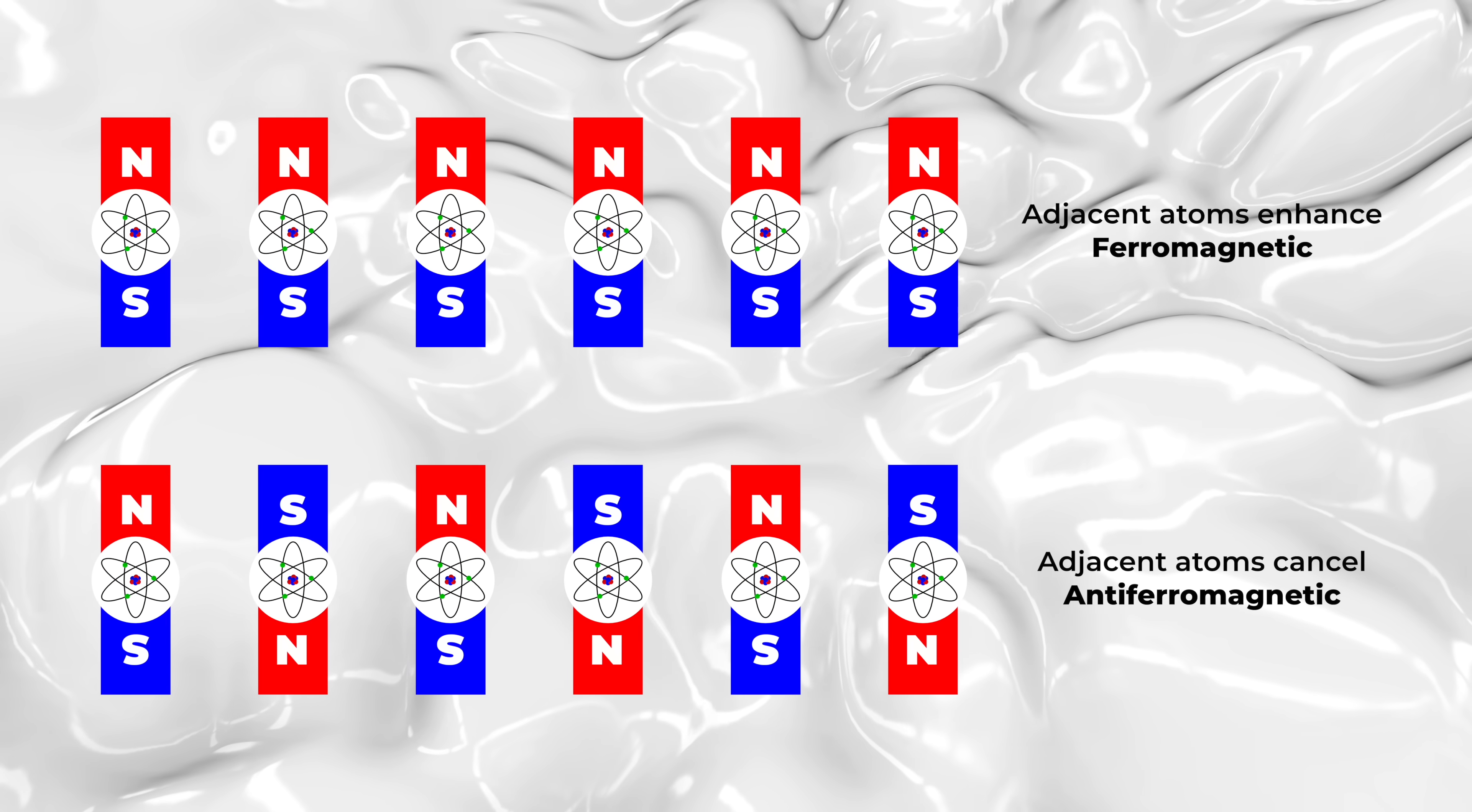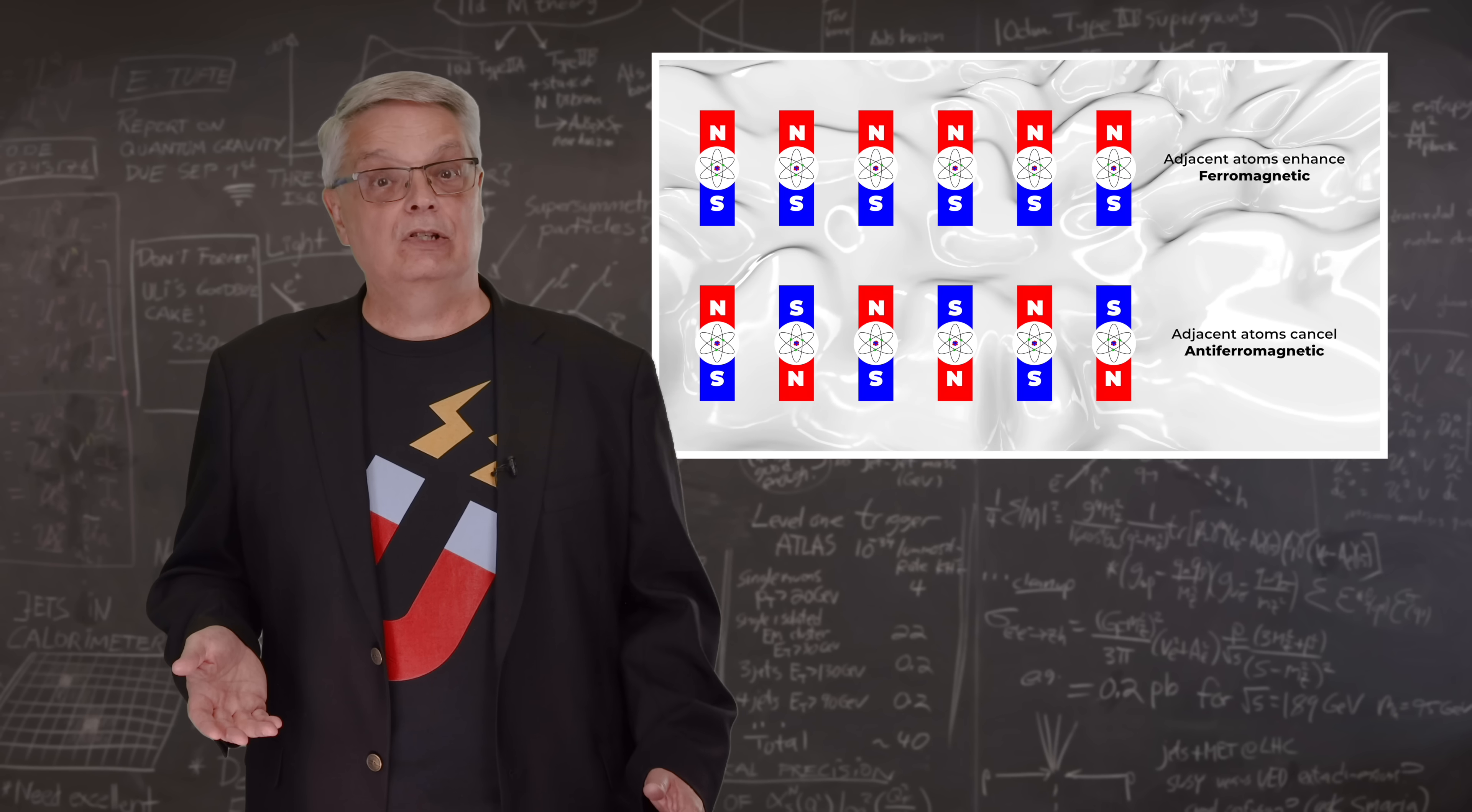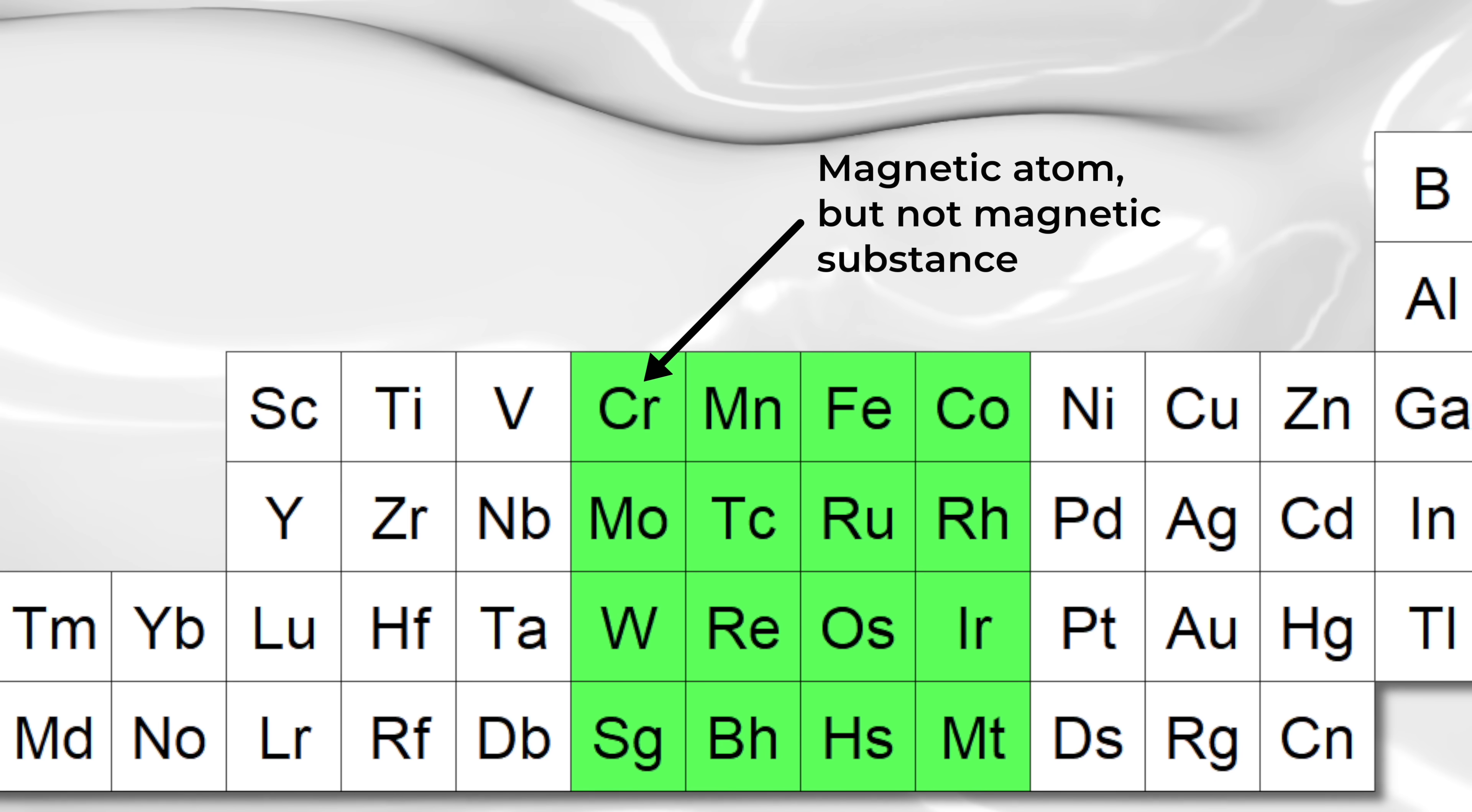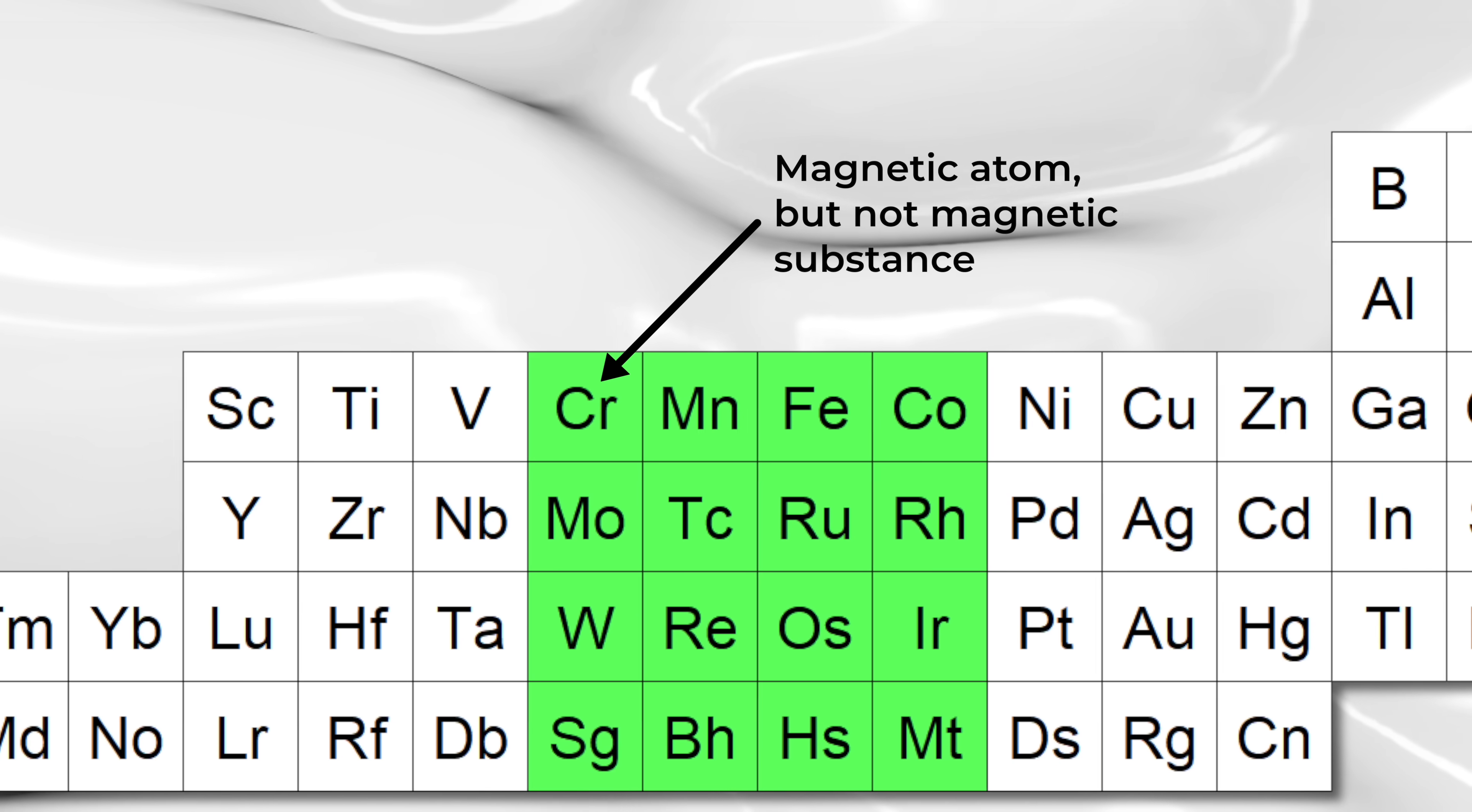Elements that prefer to have adjacent atoms in opposite configurations are called antiferromagnetic. Ferromagnetic materials are potentially magnetic, while the antiferromagnetic ones generally aren't. And this is a good place to point out why an atom's magnetism isn't the whole story. Chromium is a magnetic atom, but it's not a magnetic substance because it's antiferromagnetic at the crystal level.